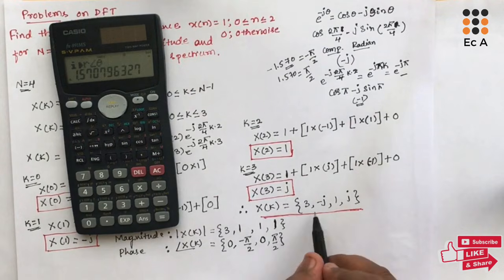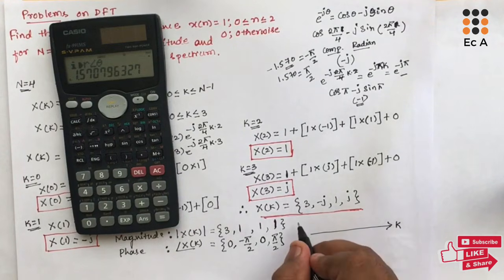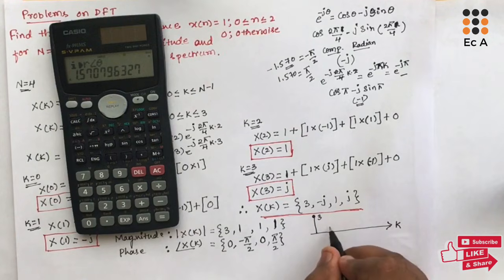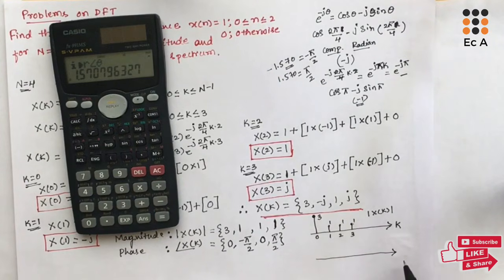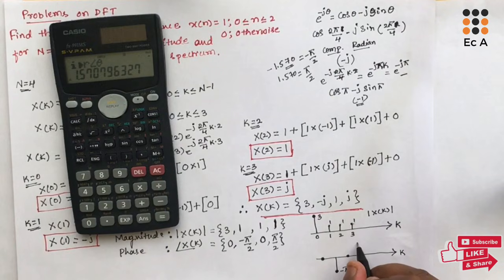Let us plot the magnitude spectrum. On the x-axis take k, and on the y-axis plot the magnitude. The values are 3, 1, 1, 1 for k = 0, 1, 2, 3. For the phase spectrum, again x-axis is k: at k=0 phase is 0, at k=1 it is -π/2, at k=2 it is 0, and at k=3 it is +π/2. This is the phase spectrum of the DFT.